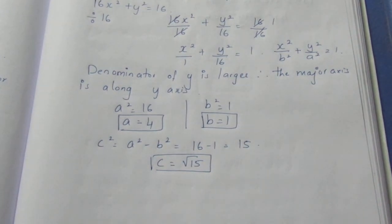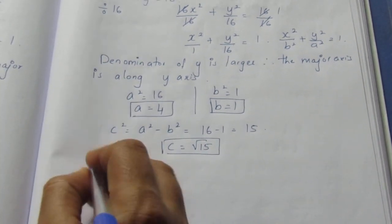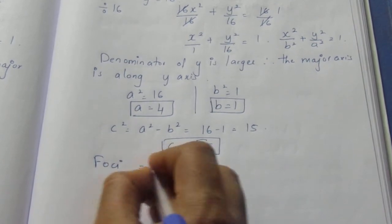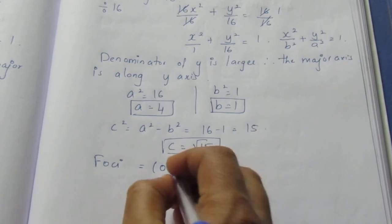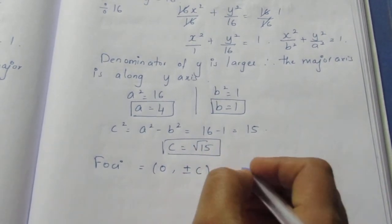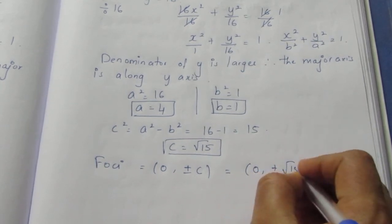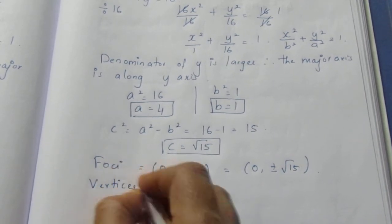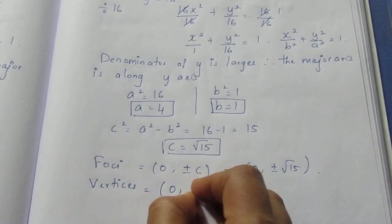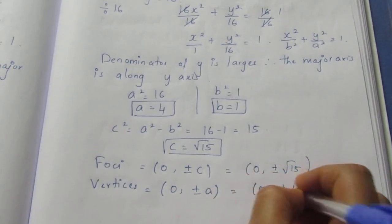So we got c to be √15. Now we will go with the questions asked. First they have asked for foci. Here we have a larger number on y axis. The major axis is on y axis, so foci is (0, ±c) = (0, ±√15). Vertices = (0, ±4).